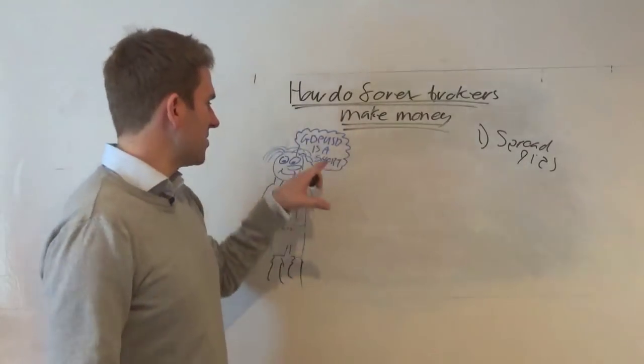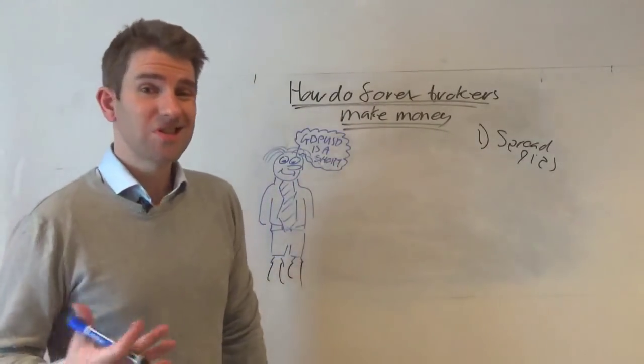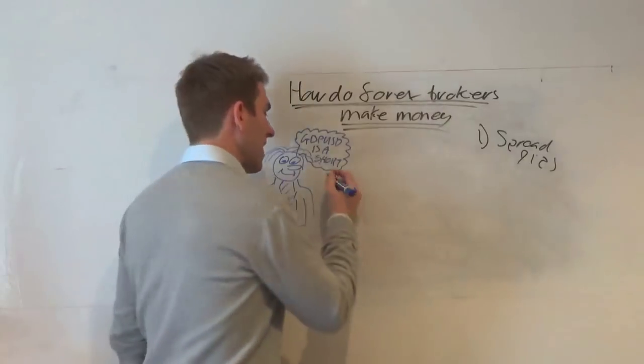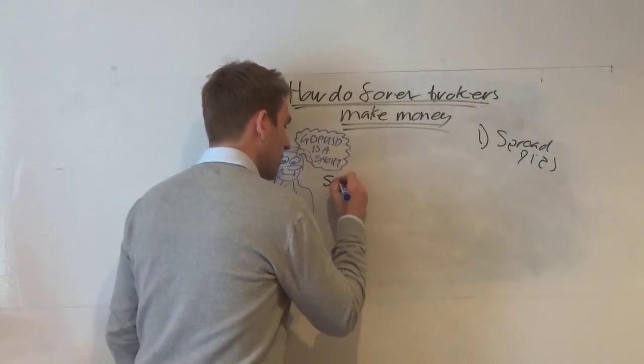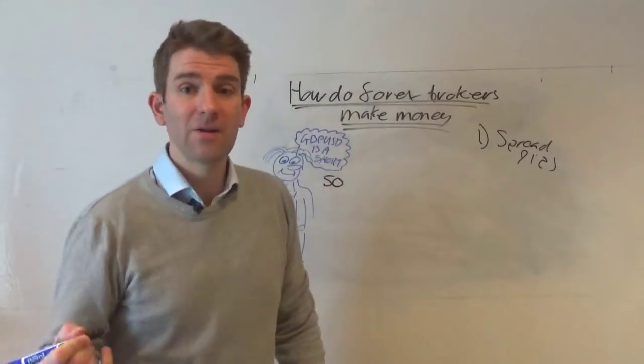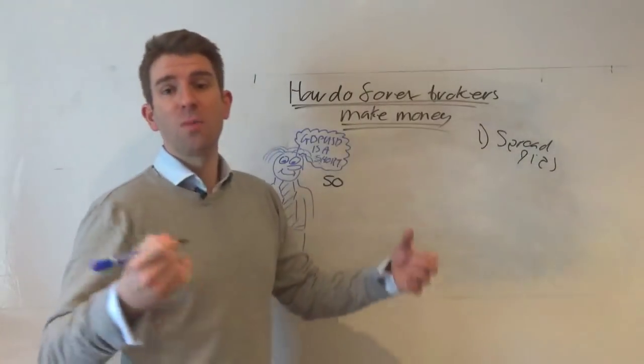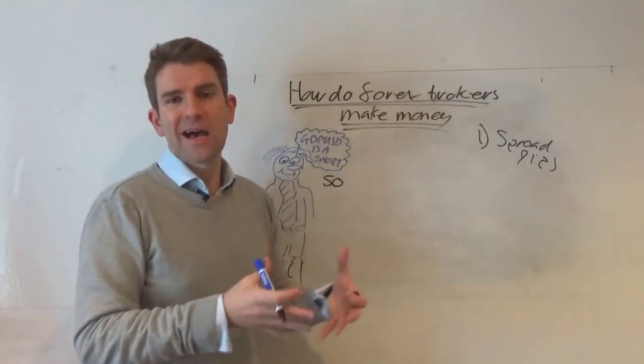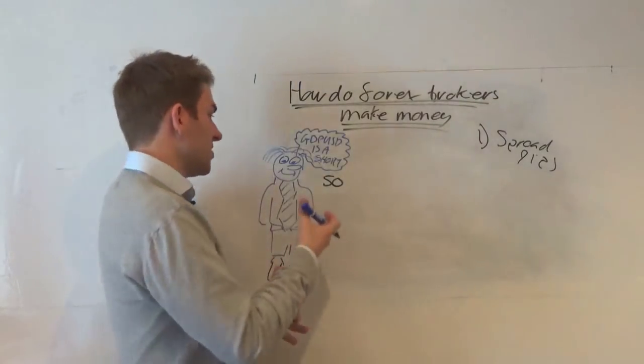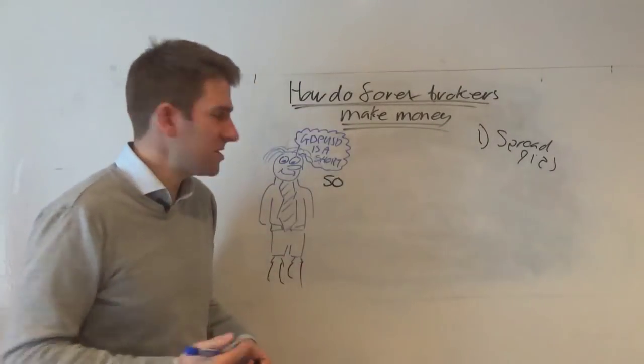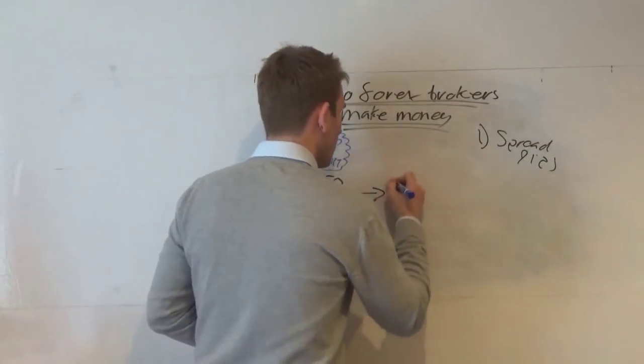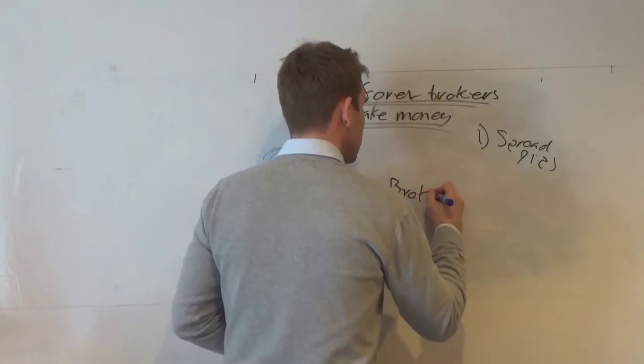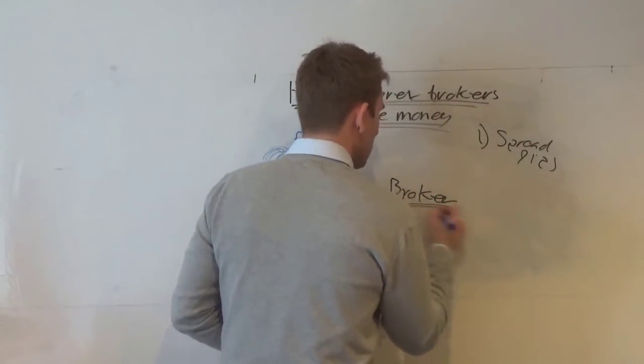He thinks GBPUSD is a short, so he decides he wants to sell 50, whatever that may be. I'm going to just use the number 50 for now. That could be 50 pounds a point, could be 50 lots, could be 50 million. It doesn't really matter. It depends on how the broker packages that, the position sizing. So let's say he sells 50 units of GBPUSD. He goes to his broker, who's sitting here in the middle, or dealer is probably the better terminology. Let's use broker for now.